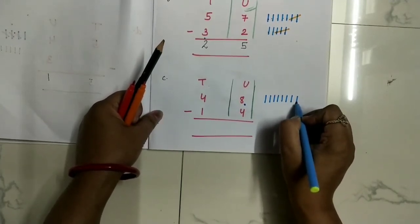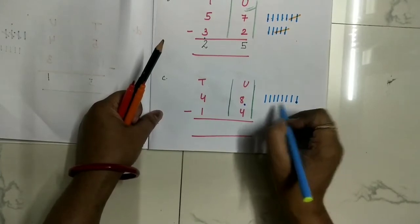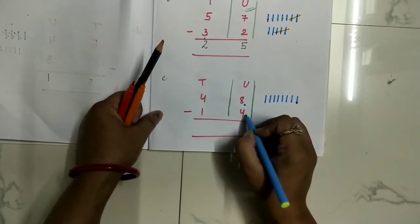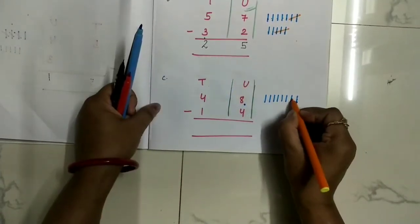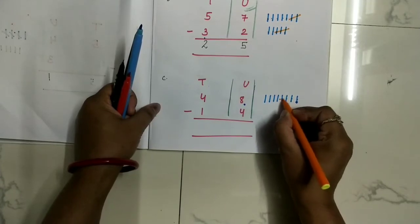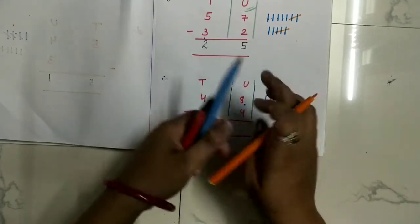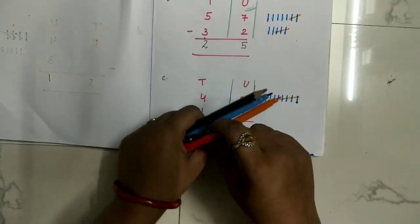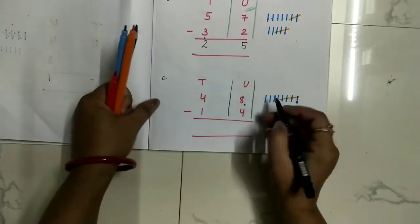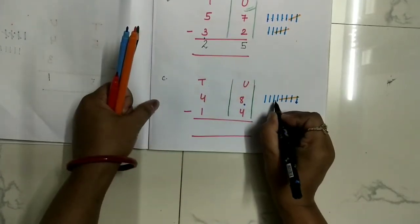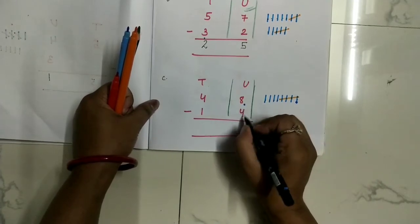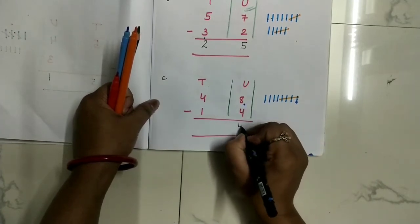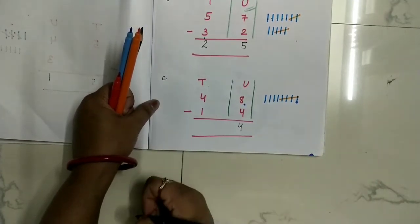Now, what we have to do? Subtract 4 from it. So remove 4 lines: 1, 2, 3, 4. How many lines are remaining? Count it: 1, 2, 3, 4. It means 8 minus 4 is equal to 4.